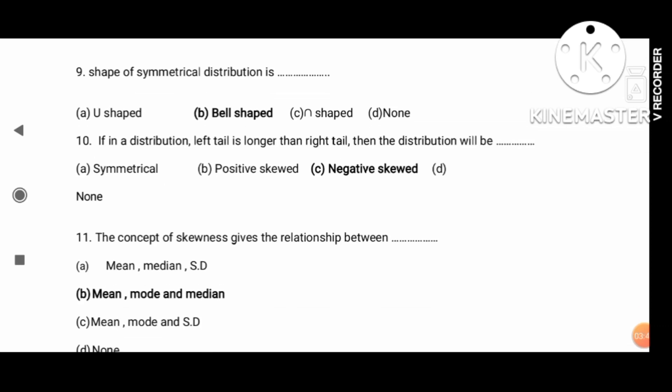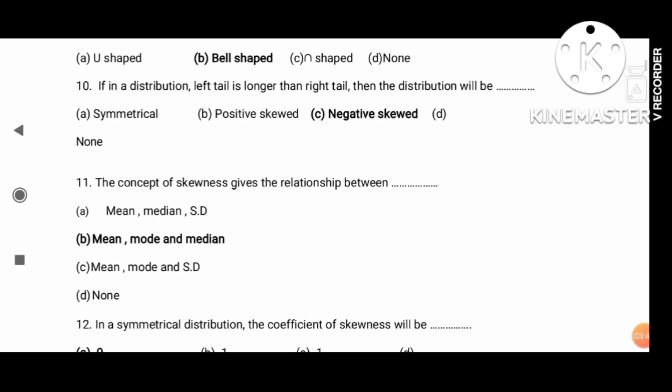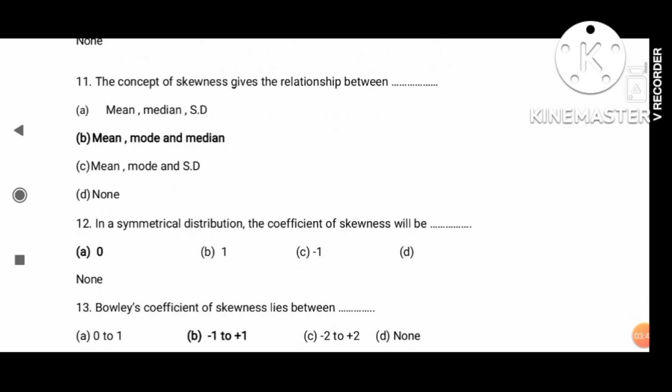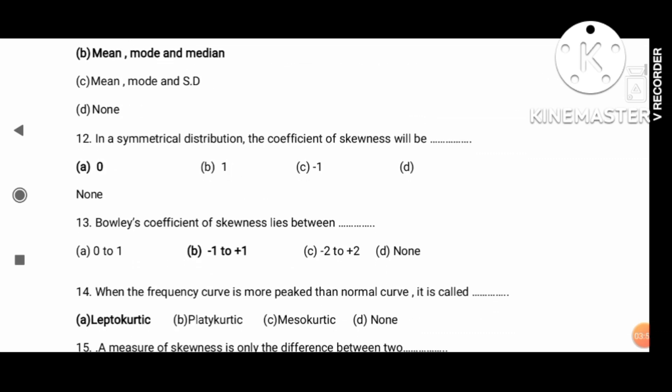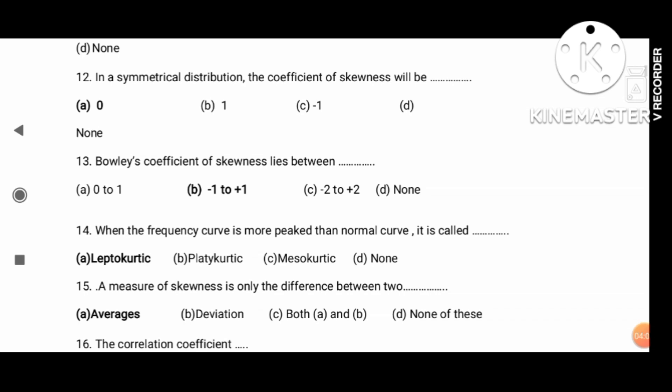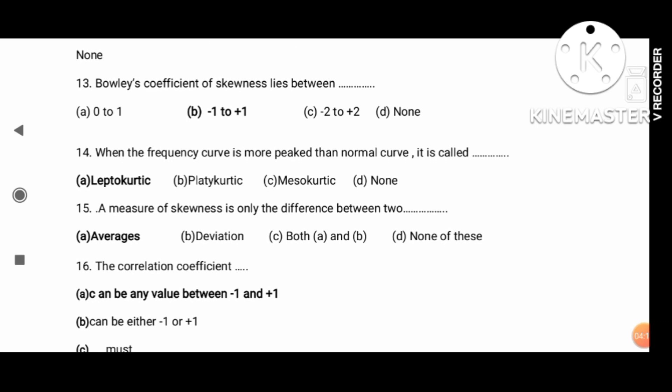The concept of kurtosis gives relation between mean, median, and mode. For symmetrical distribution, the coefficient of kurtosis will be 0. The frequency curve more peaked than the normal curve is called leptokurtic. This is a very important question.